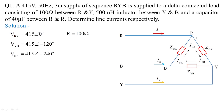The given component values are: resistance between R and Y is 100 ohms, inductor is 500 millihenries, and capacitance is 40 microfarads. The unknown parameters are the impedances Z_RY, Z_YB, and Z_BR. To find these, convert the passive elements into impedance values by first calculating inductive and capacitive reactance.